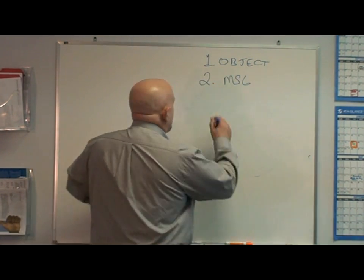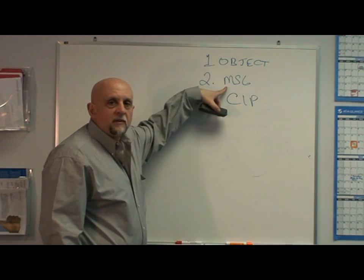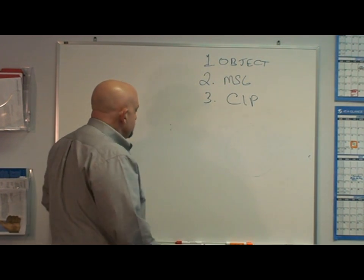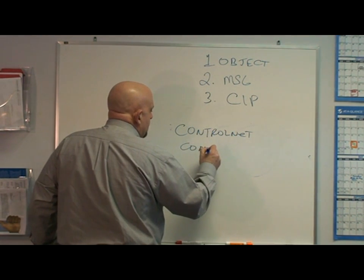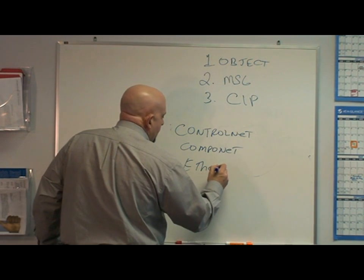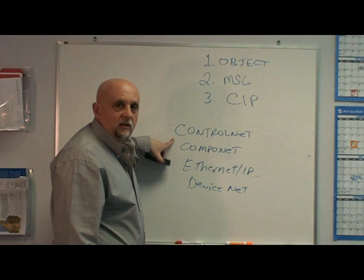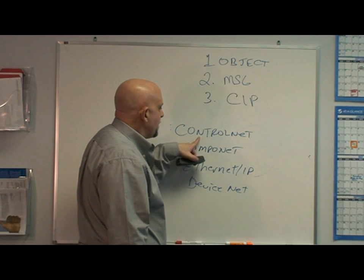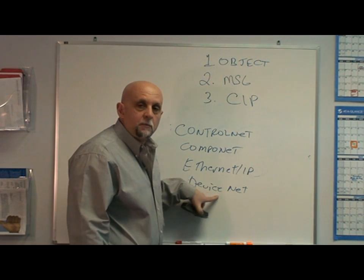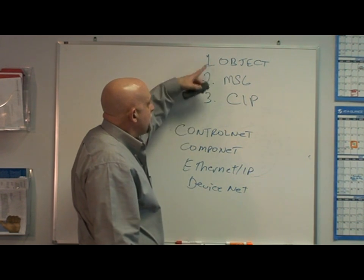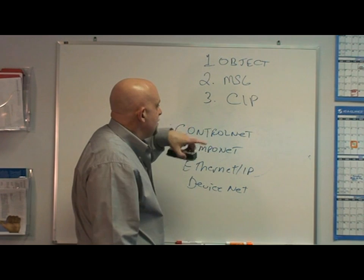The third thing you should know about DeviceNet is that it's part of CIP — the Common Industrial Protocol. This object-based structure and messaging is what CIP is. It's the same for ControlNet, EtherNet/IP, and DeviceNet — all use the same object-based structure and the same explicit and implicit messaging. When you send those messages over the ControlNet physical wire, you get ControlNet. Over Ethernet, you get EtherNet/IP. Over CAN, which is the basis for DeviceNet, you get DeviceNet. CIP is the core for all of these, and it is owned and maintained by the ODVA.